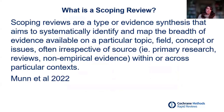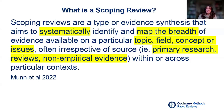Here's a definition from Zachary Munn: scoping reviews are a type of evidence synthesis aiming to systematically identify and map the breadth of evidence available on a particular topic, field, context, or issue, often irrespective of source. Key elements: it's a systematic, rigorous, exhaustive, transparent process covering a breadth of evidence — not a narrow question about a specific intervention — but looking across a broad area, whether interventions, exposures, or a concept such as infertility. It's also likely to draw on a range of different types of evidence.